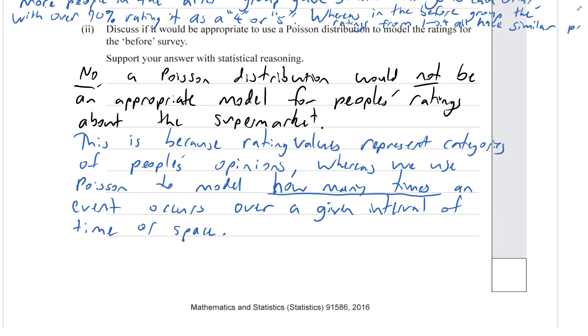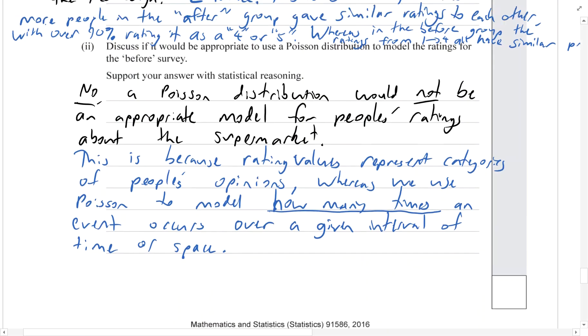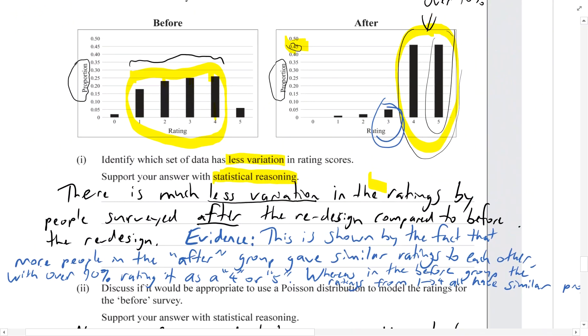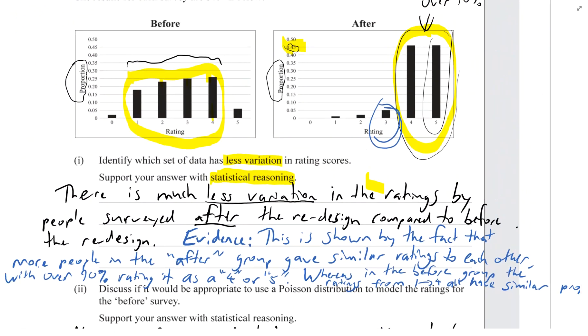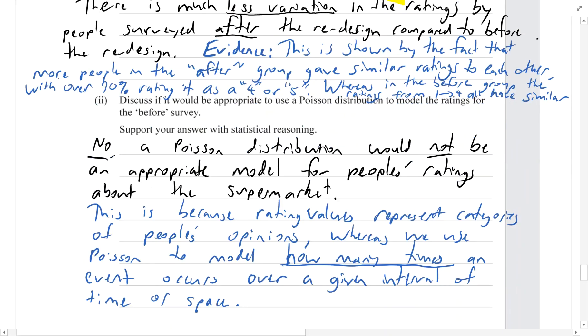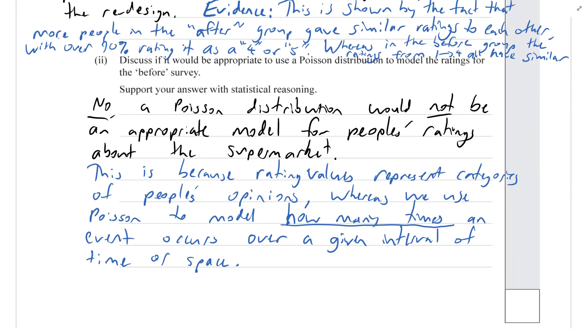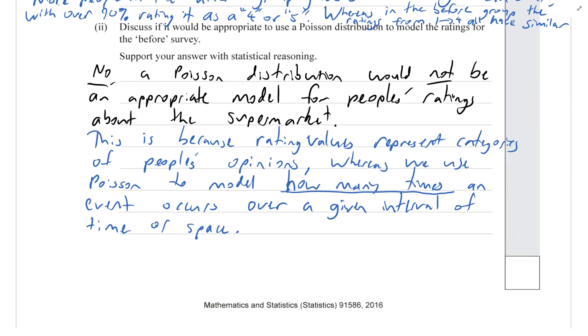It doesn't mean that you couldn't get a Poisson distribution model that looked similar to the distribution from a survey of ratings - you could get that and so it would look like a good model. But the problem is that you wouldn't be able to trust it to always model a situation involving ratings well. And the reason is because Poisson mathematically is not built around a system of categories of ratings, it's built around how often something happens - so frequency is what Poisson is built around. So you just wouldn't use it for that situation.